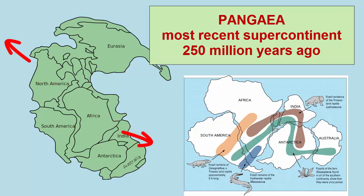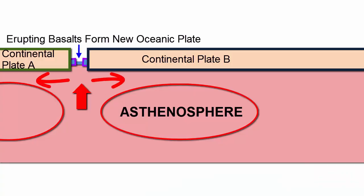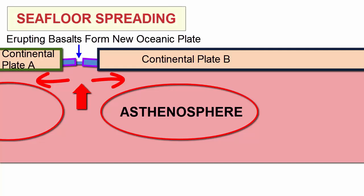After the supercontinent began to break apart and the plates thinned enough, dense basaltic magmas erupted, and the new plate that formed was oceanic, producing oceanic plate fused to broken halves of continental plate, now moving away from each other. Through this process, new oceans form and spread. We call this seafloor spreading.